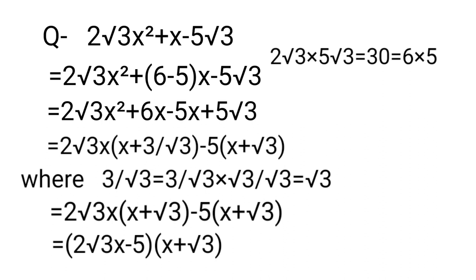This gives 2√3x(x + √3) - 5(x + √3). Taking (x + √3) common: = (2√3x - 5)(x + √3).